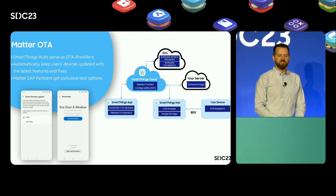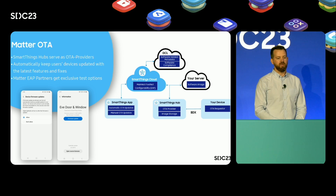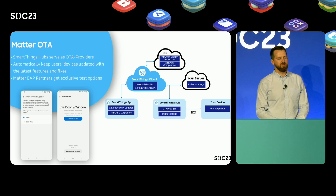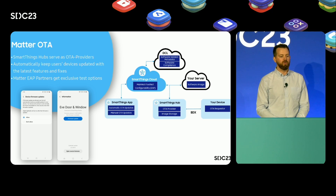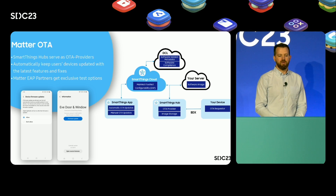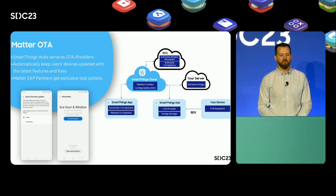Once devices are connected to SmartThings, we're also making it easy for users to get the latest software updates with Matter over-the-air update support on SmartThings hubs. Whether your device has an exciting new feature or critical fixes, SmartThings will provide your devices with the latest certified software updates as soon as they're available on the Distributed Compliance Ledger. Updates are downloaded directly from your servers to the hub and then transferred to your devices via the Bulk Data Exchange protocol.